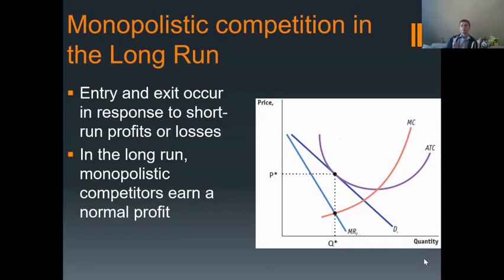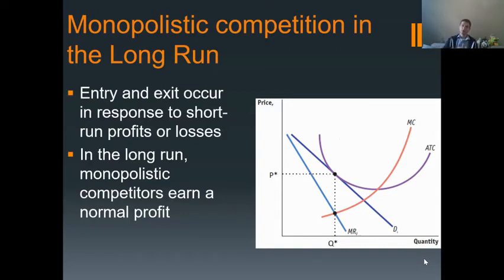However, there is a long run for monopolistic competitors. Because it's easy for firms to enter and exit the market, there are long run consequences. Monopolistic competitors, like many monopolies, have a monopoly over their specific differentiated product — that's why they have separated out marginal revenue and demand curves, and why it's not looking like a perfect competitor. However, since there are so many of them, they will have a long run in terms of entry and exit because it's so easy to enter and exit.